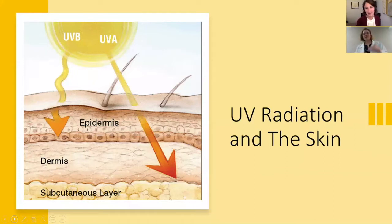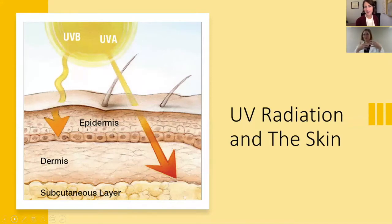The outer layer, the epidermis, is most affected by UVB — ultraviolet B radiation — whereas UVA primarily affects the dermis. Depending on which type of UV light we're exposed to more, and usually from the sun we get both, some sunscreens will screen out one type or the other. You really want one that screens out both, because both have an effect — they just have differing effects on the skin.